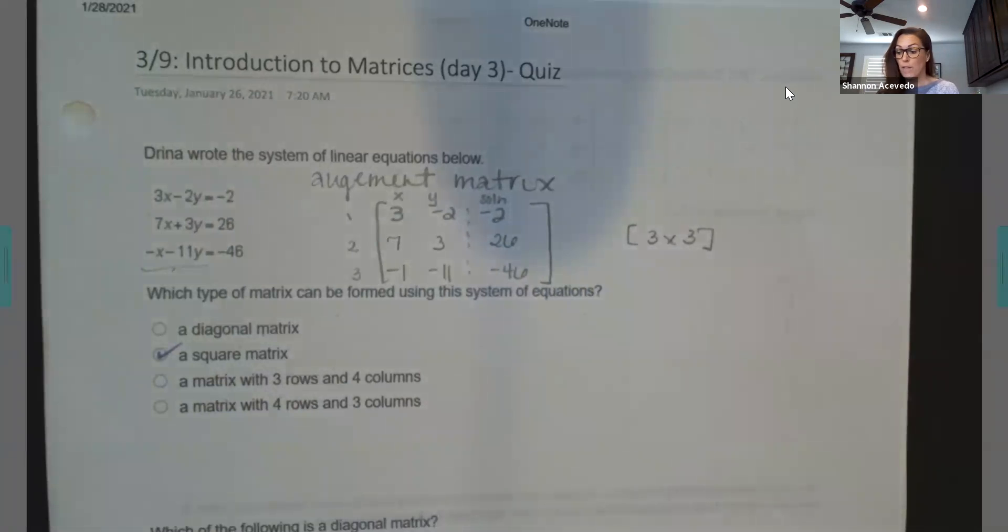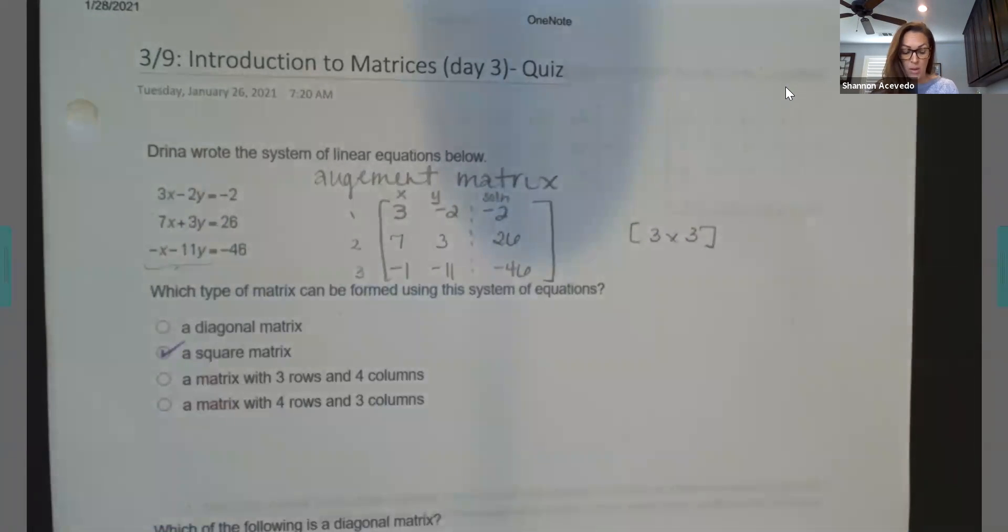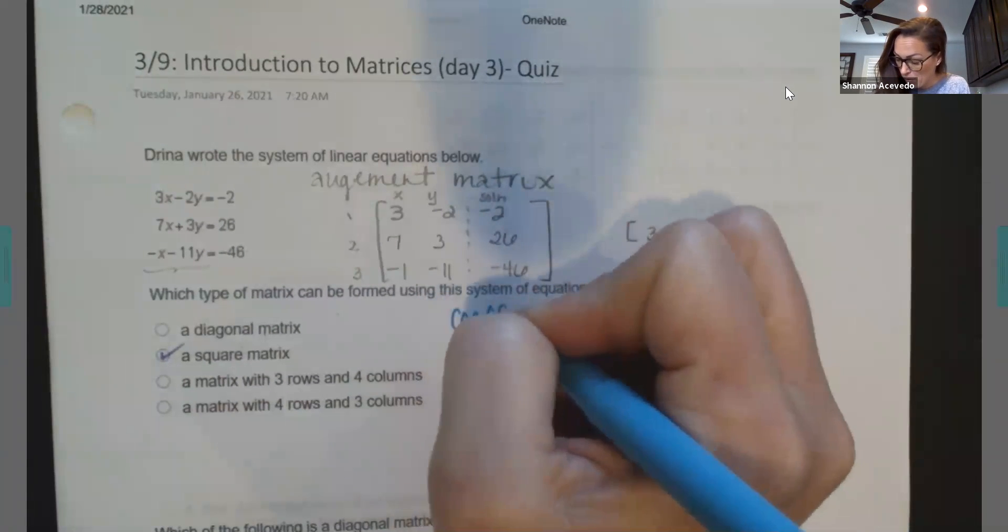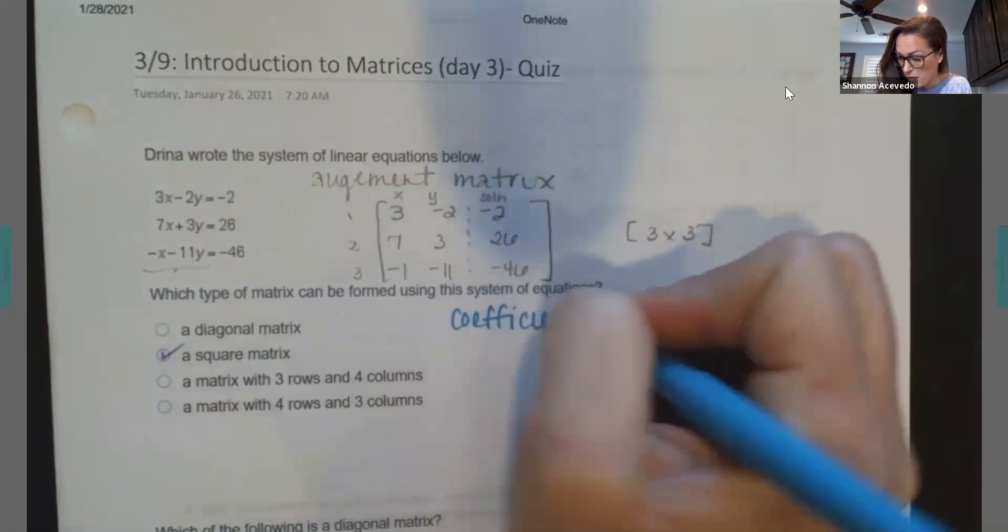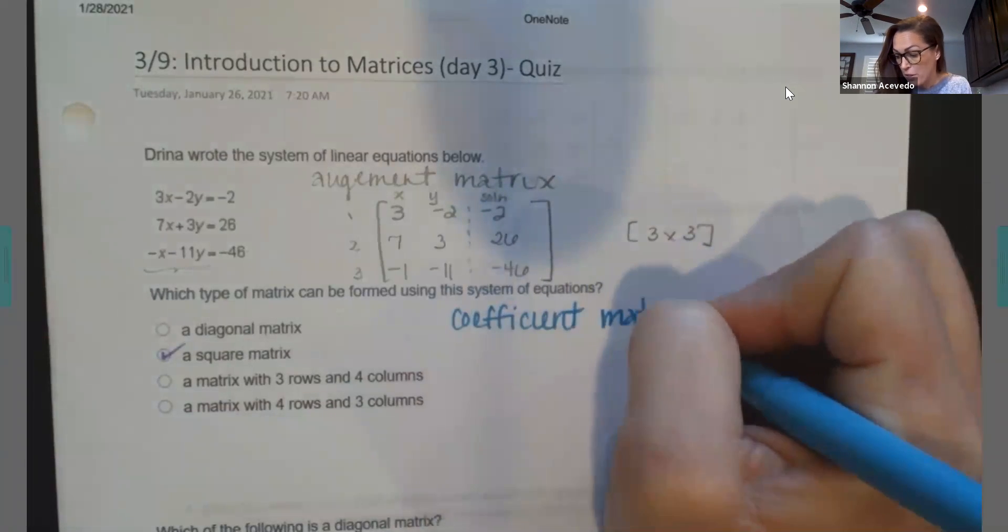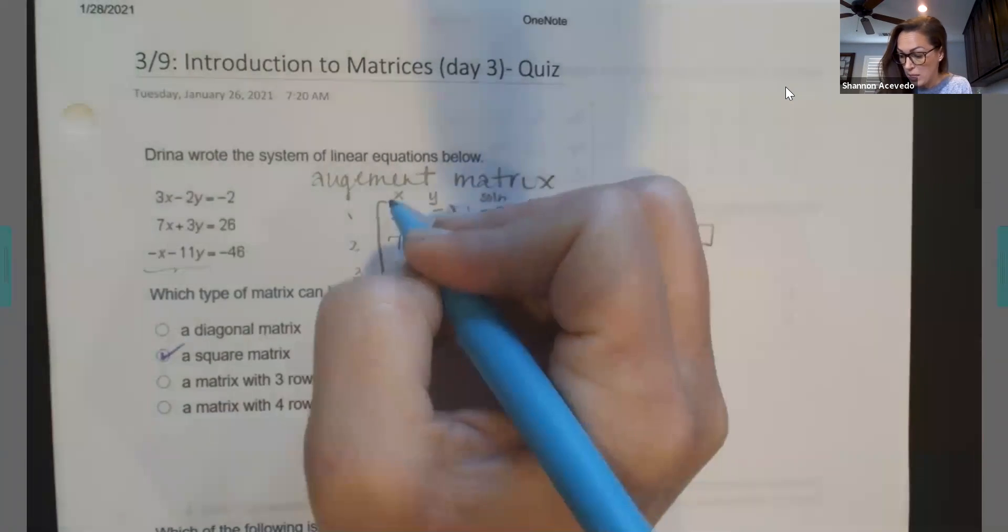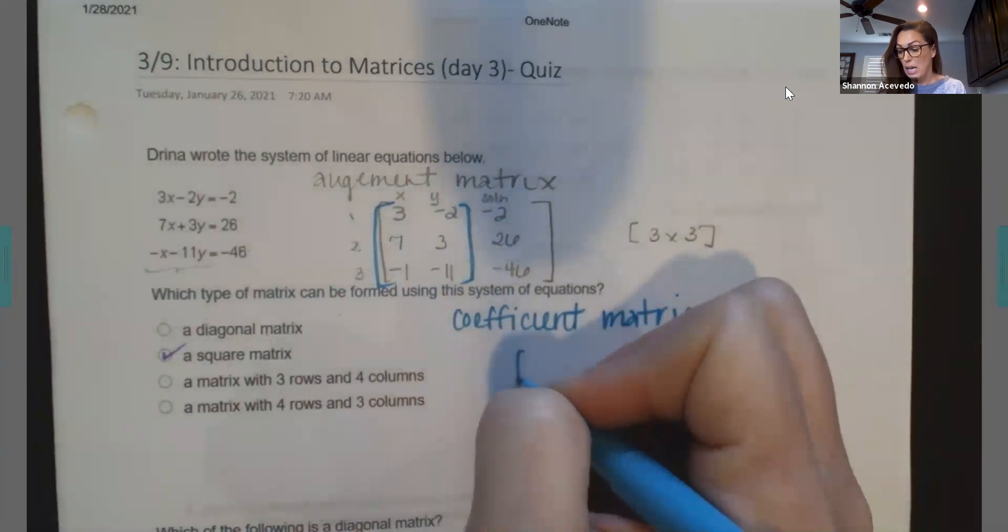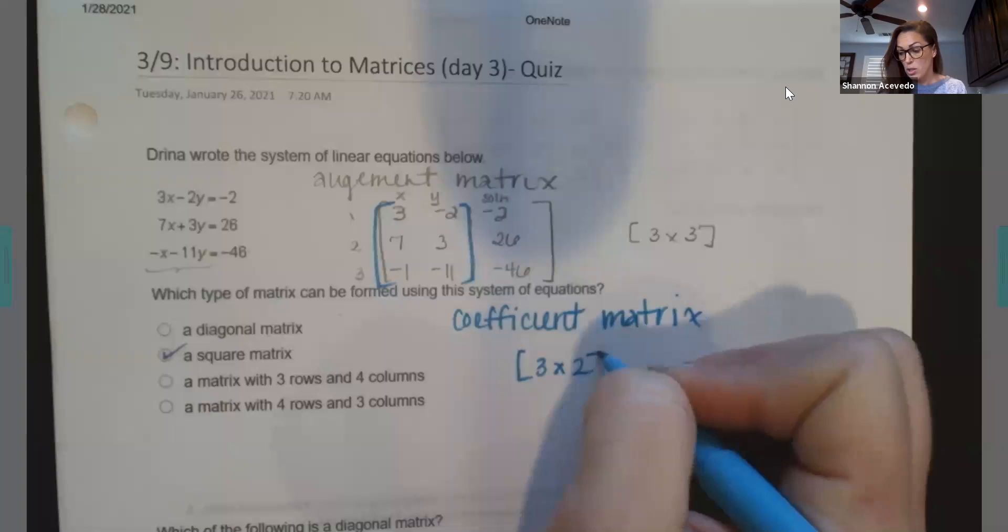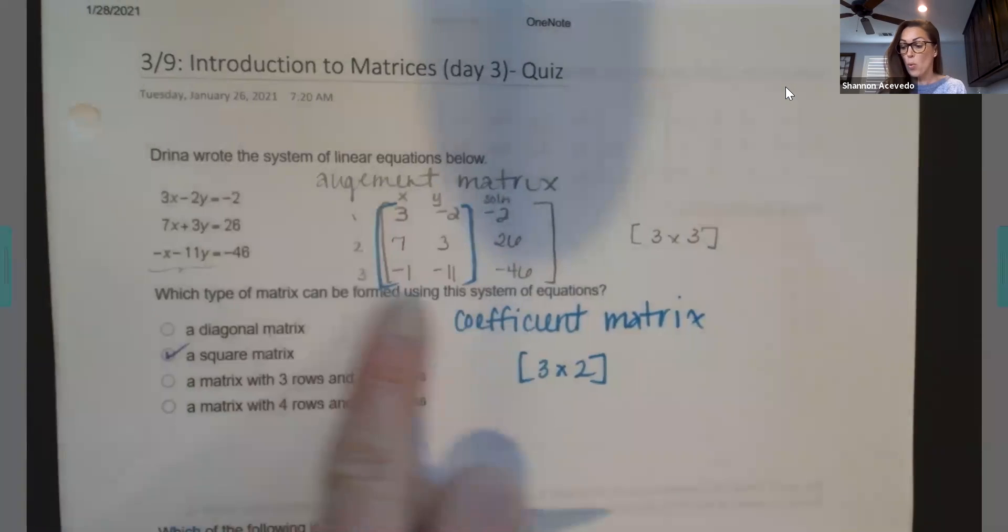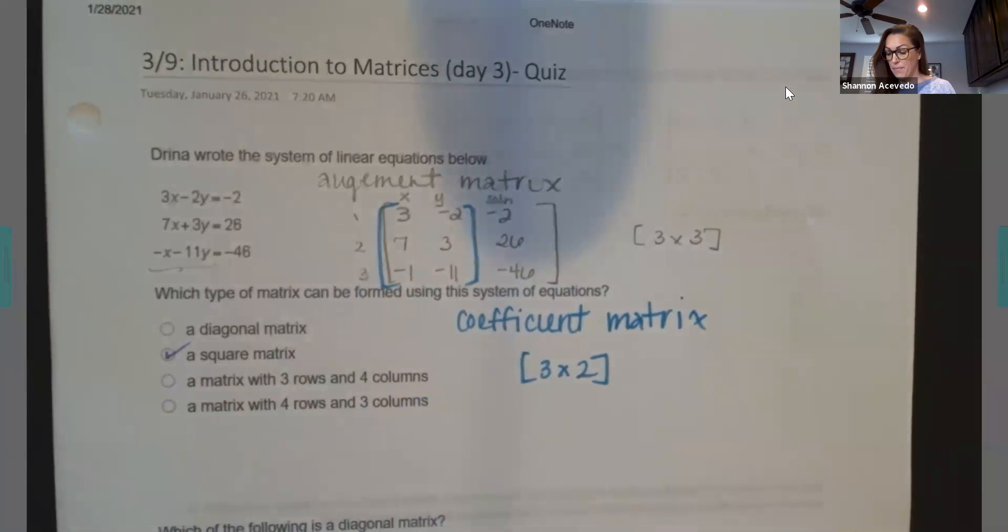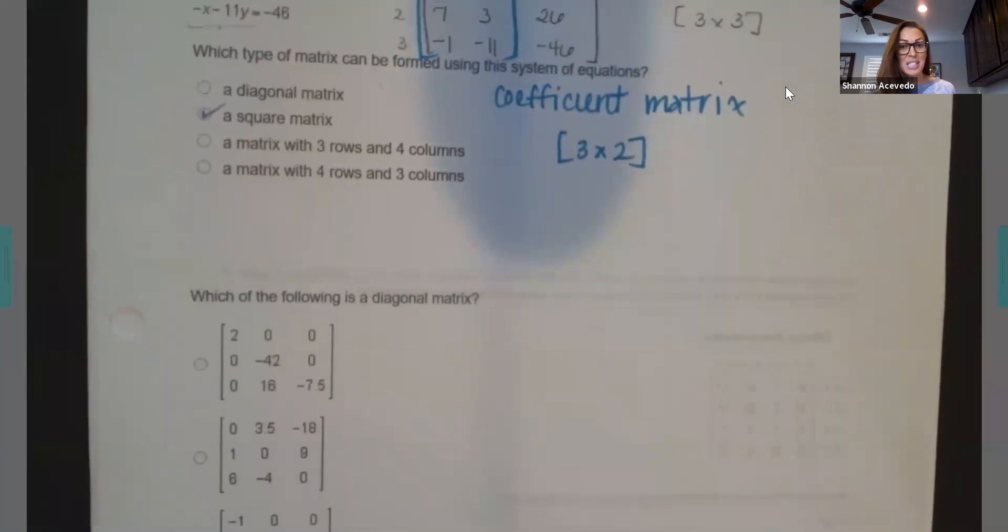Now, if they ask for the coefficient matrix, the coefficient matrix is only this piece right here. So the coefficient matrix would have been a three by two. So it's only using the coefficients of the variables.